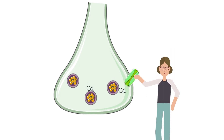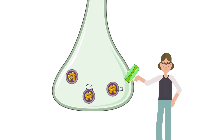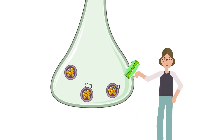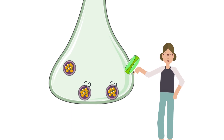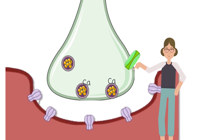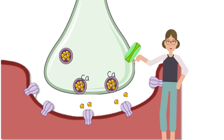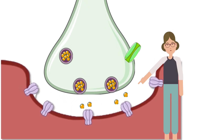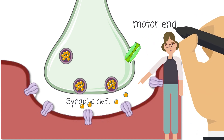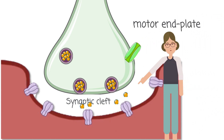The calcium then affects the vesicles and they release the neurotransmitters into the space between the axon bulb and the muscle fiber membrane. This space is known as the synaptic cleft, and this area is called the motor end plate.